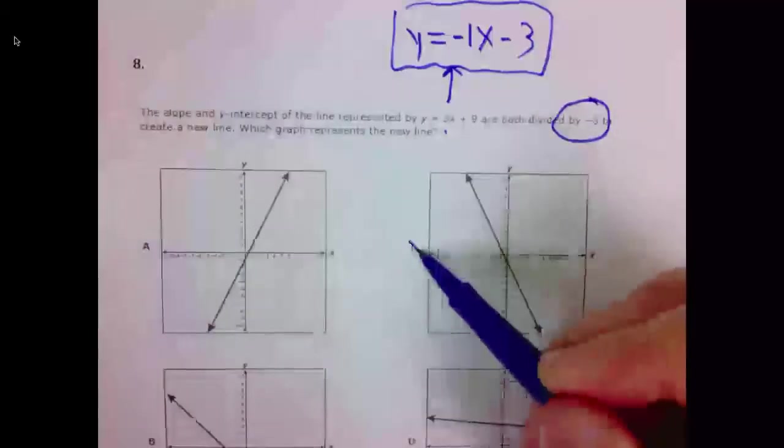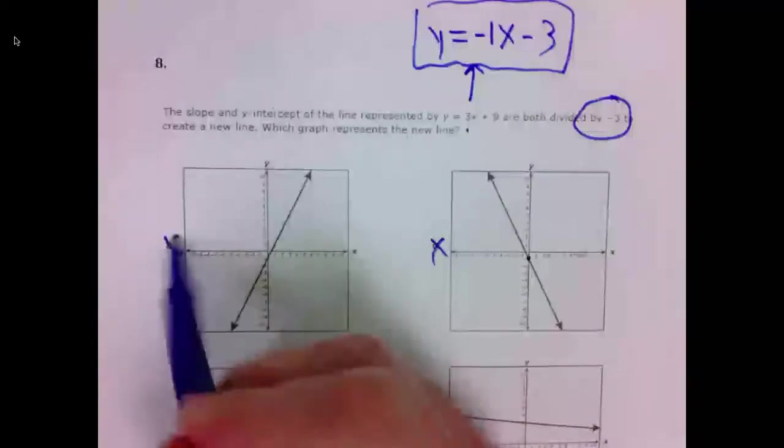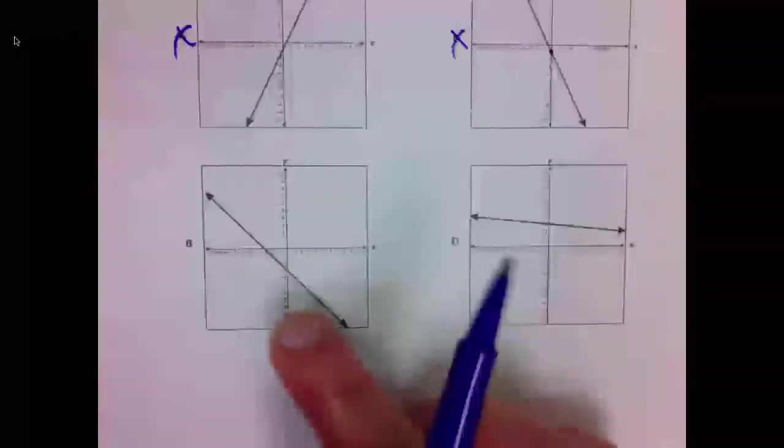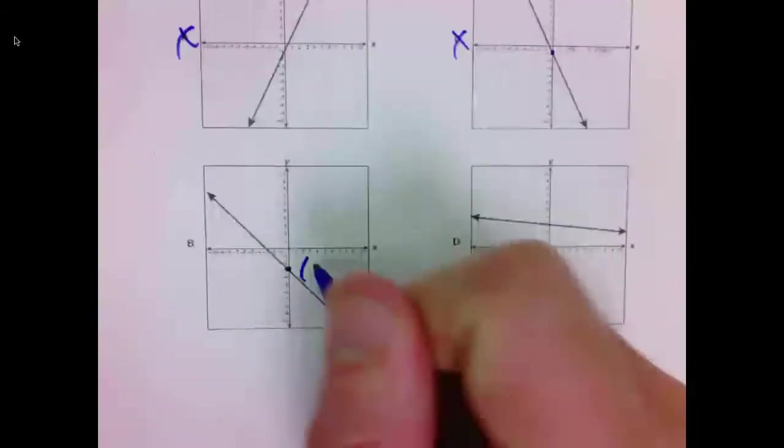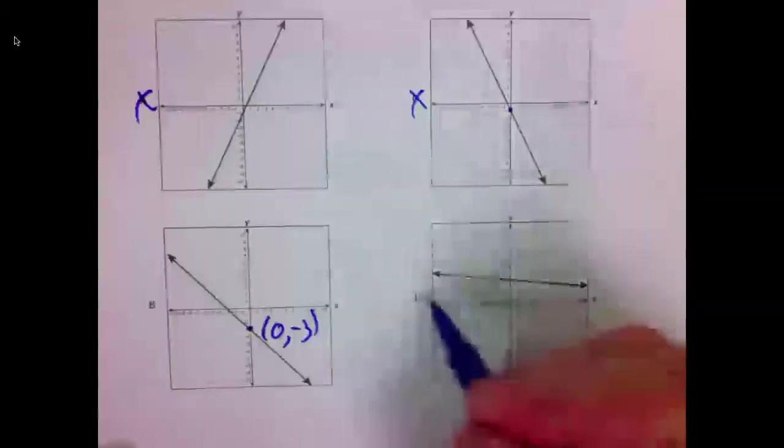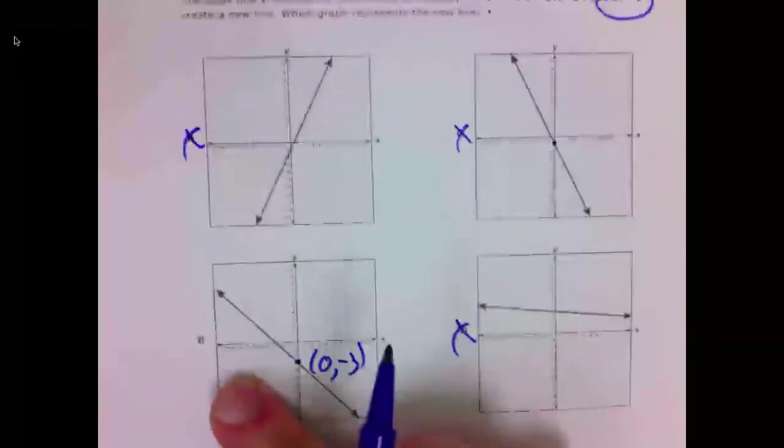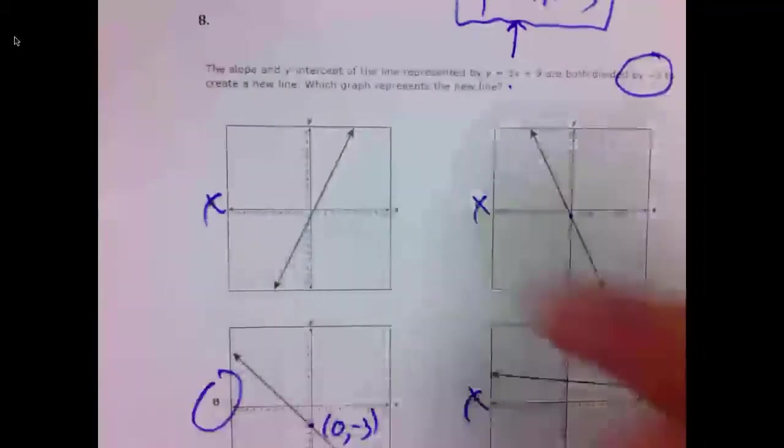That eliminates C. That eliminates A. B has a Y-intercept of negative 3. D has a Y-intercept of positive 3. So the only one with a Y-intercept of negative 3, that is B. 8 is B.